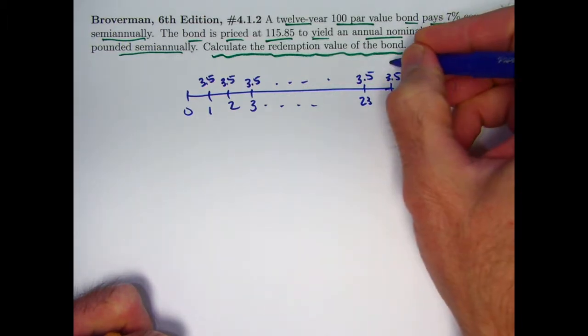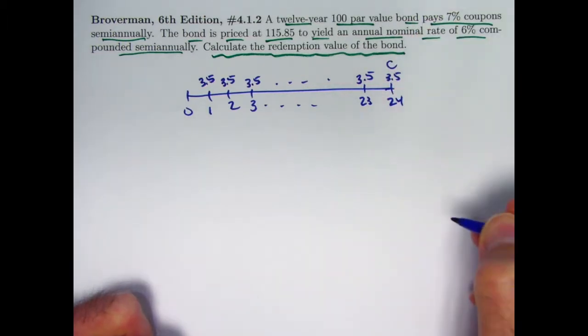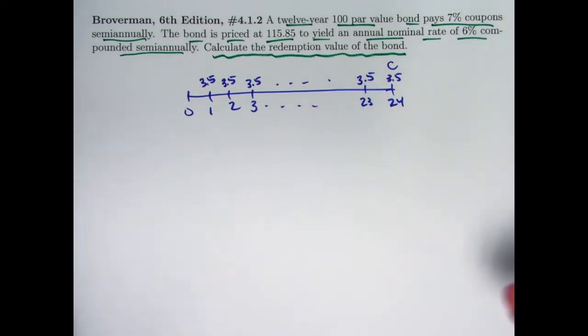And then you've got your unknown redemption value. Let's call that C. And again, evidently here, C is not the same as the face value, even though it usually is.